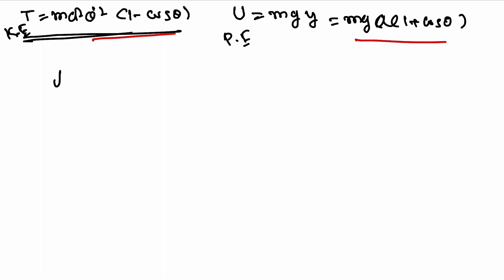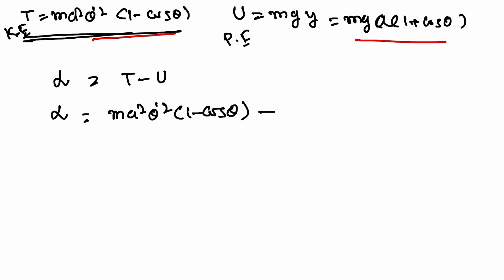The Lagrangian is L = T - U = ma²θ̇²(1 - cosθ) - mga(1 + cosθ). This is the Lagrangian of the particle.